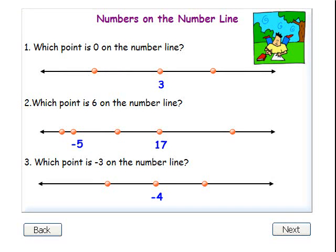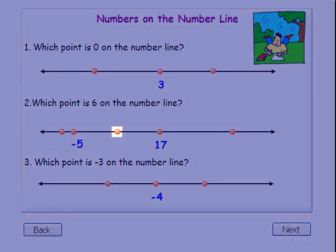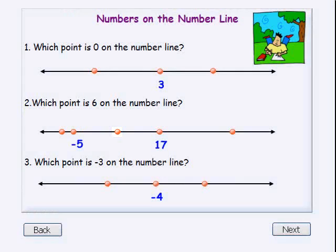Number two: which point is six on the number line? Six is greater than negative five and less than seventeen, so it is to the left of seventeen and to the right of negative five on the number line.